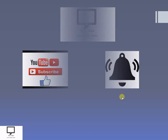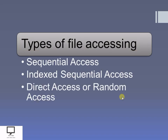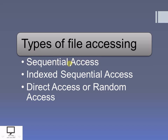So friends, let's start with the content. First of all, I am going to explain what are the different types of files, or in which different ways we can access the content of the files. The first one is sequential access. In sequential access, the name itself suggests that the data, information, or the records are accessed sequentially.